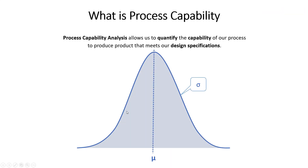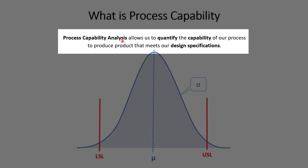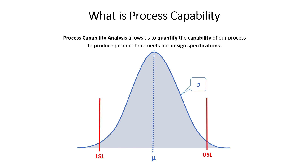So let's get into what is process capability. You have some process with some output, and what I'm showing here is a distribution of that output — I'm assuming it's normally distributed. That's an assumption in process capability: that the output of your process is normally distributed. There's some mean value, some standard deviation, and we also have the upper and lower specification limits.